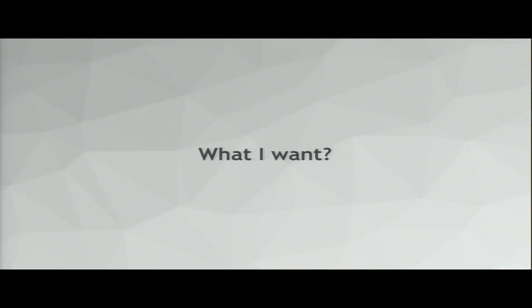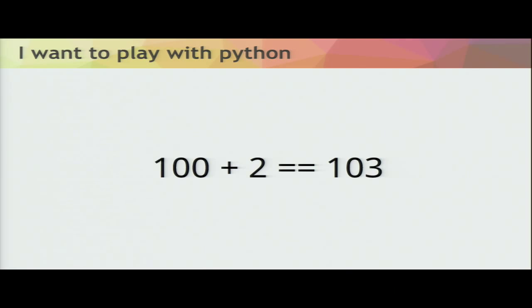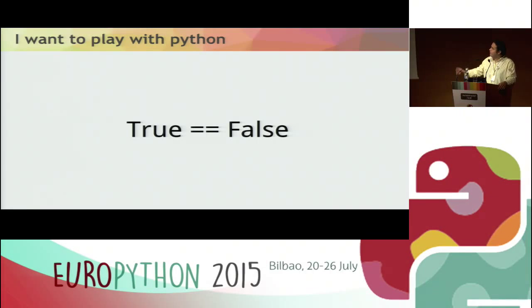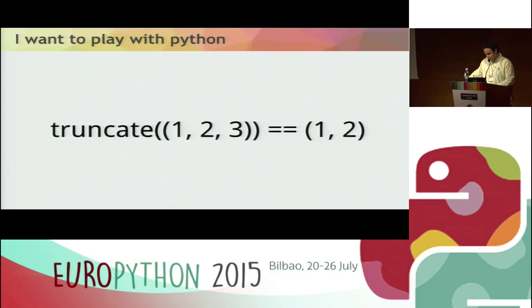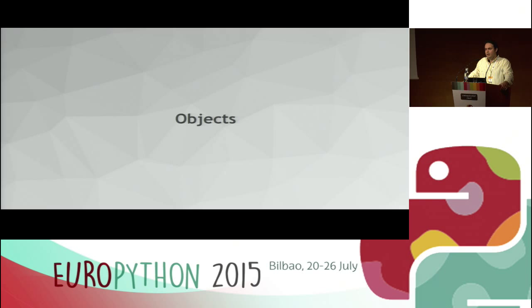What I want in this talk: I want to play with CPython. I want to have 100 plus 2 equal 103. I want to have true equals false. I want to truncate a tuple. Before we can do this crazy stuff, we have to know how Python objects are structured.